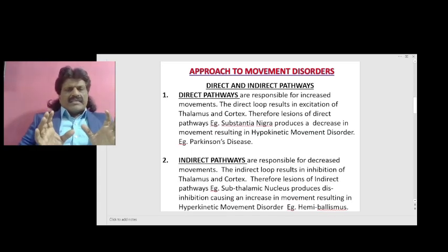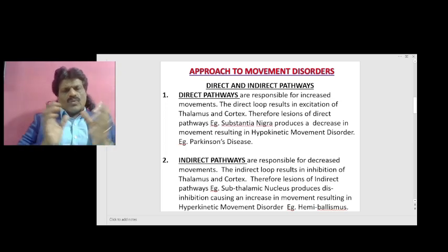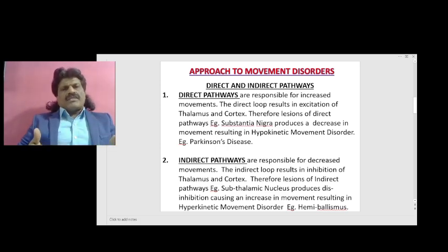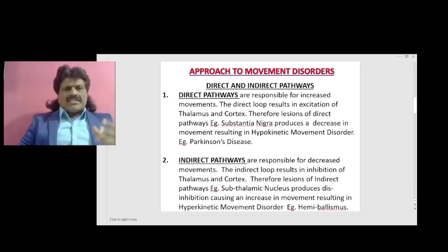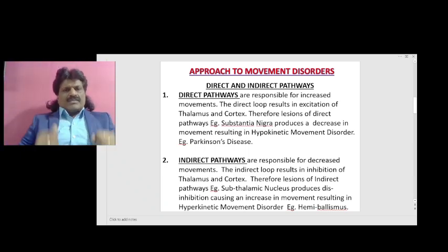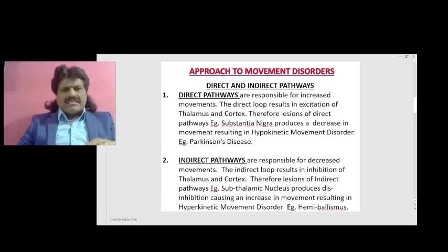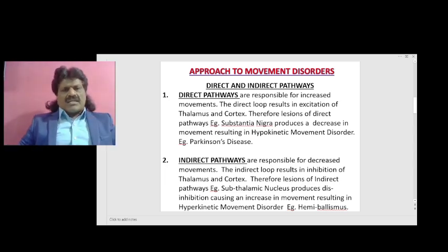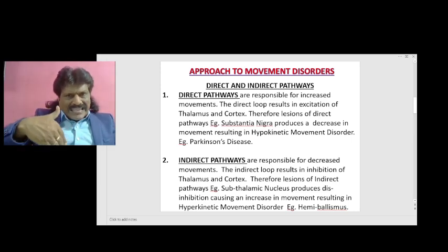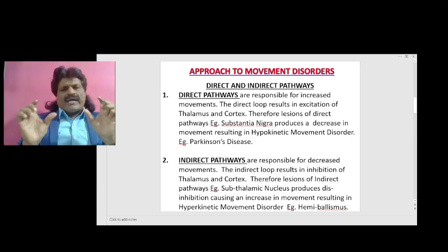First we need to understand the two important pathways: the direct and indirect pathways, which are responsible for diseases like Parkinson's disease or hemibalismus. The direct pathway is responsible for increased movements; the direct loop results in excitation of thalamus and cortex. Therefore, lesions of the direct pathway — example substantia nigra — produce a decrease in movement resulting in a hypokinetic movement disorder, example Parkinson's disease.